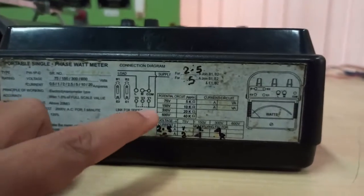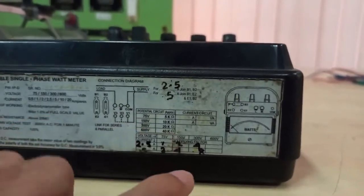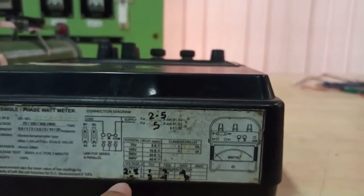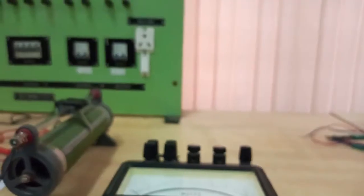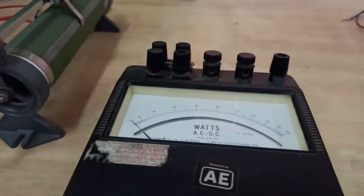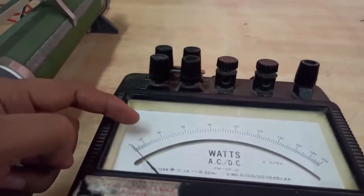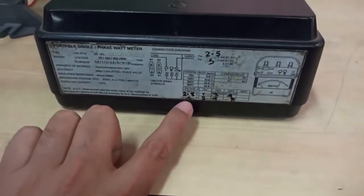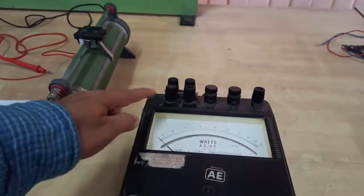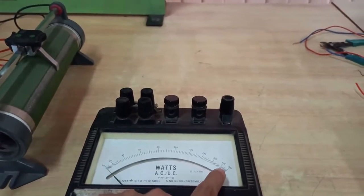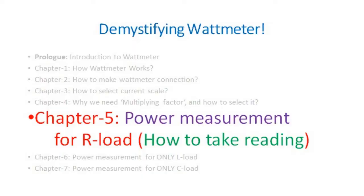On the wattmeter you will find a reference table listing current and voltage scales. For example, if you select 2.5 A and 75 V, the multiplying factor is 1; if you select 5 A and 150 V, the multiplying factor is 4. If the display table is not available, you can calculate it: multiply the current scale by the voltage scale, divide by the full scale deflection value, and take the nearest integer.